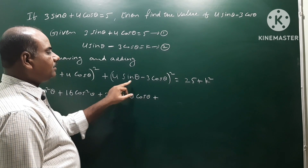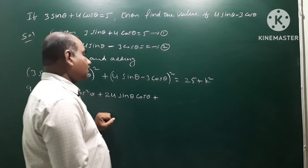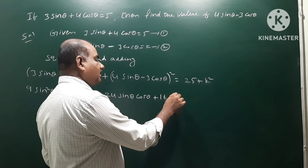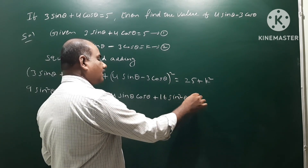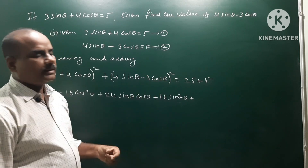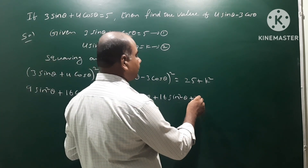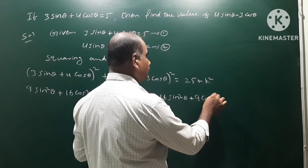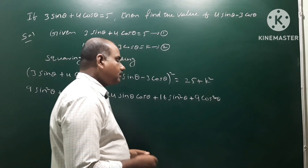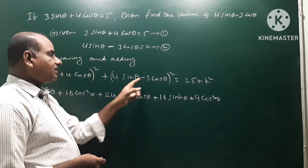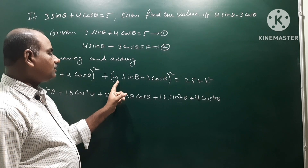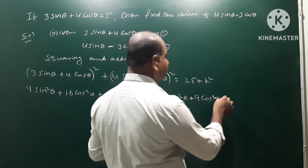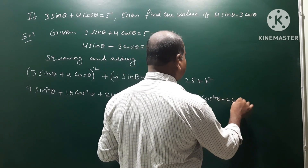Next, expanding (a − b)²: a² is (4sinθ)² = 16sin²θ, b² is (3cosθ)² = 9cos²θ, and −2ab gives −2 × 4 × 3 sinθ cosθ = −24sinθ cosθ.